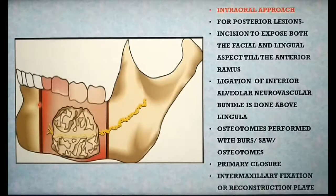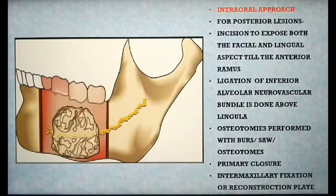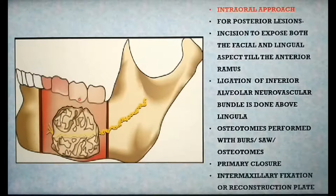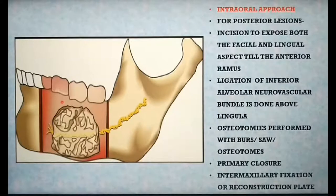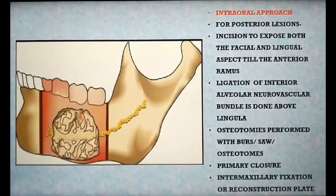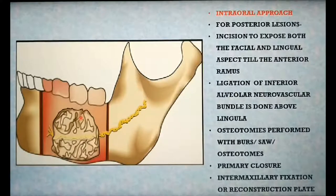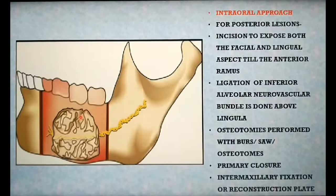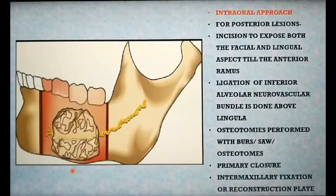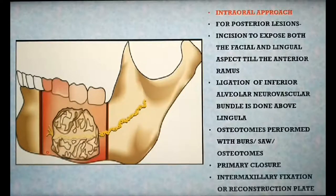In the tooth-bearing area, one or two teeth on either side of the planned resection site may be extracted and vertical cuts performed through the extraction sockets. Once osteotomy cuts are complete, separation of the bony cuts can be finalized with an osteotome, and the specimen is separated from its bony and soft tissue attachments. The detachment of the specimen from the soft tissue attachment is similar to that performed in marginal resection. The only difference is that there is no continuity of the lower border in segmental resection. Once completely excised, primary closure is done and intermaxillary fixation or a reconstruction plate is necessary to preserve alignment of the fragments.